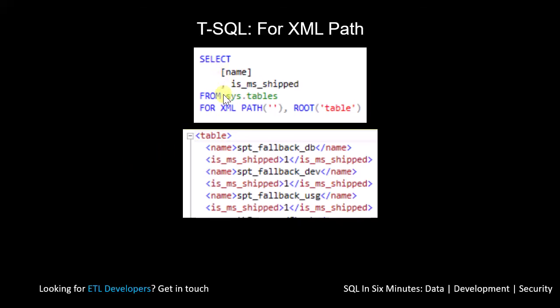This one is by far the most popular one that I use. We're using FOR XML PATH without specifying anything, but we are declaring the root here — we're saying the root of all these XML values is going to be 'table'. This returns the name and is_shipped for all the tables. I could do this with procedures and so on. When it comes to FOR XML PATH, this is by far the most popular format where I specify FOR XML PATH and declare a root above it.